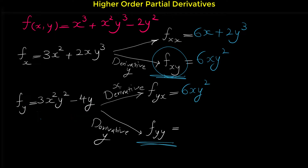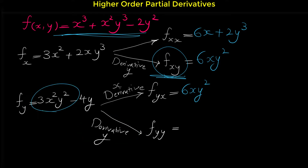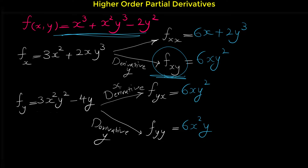Now let's find f sub yy, which means taking the derivative of f twice with respect to y. The first derivative of this function with respect to y is our earlier expression. Now we take the derivative of that expression again with respect to y. The derivative of 3x squared y squared with respect to y is 6x squared y — the derivative of y squared is 2y, multiplied by 3 gives 6x squared y — minus the derivative of 4y, which is 4.